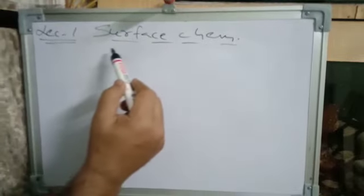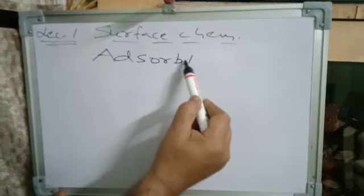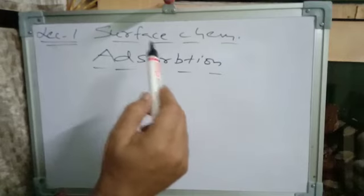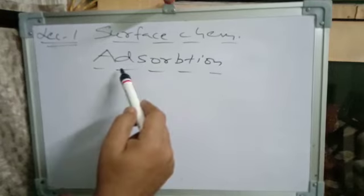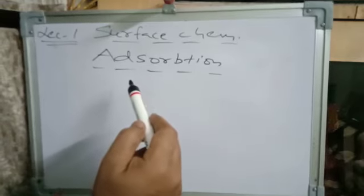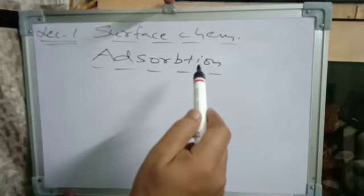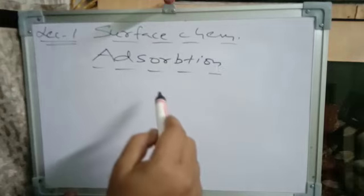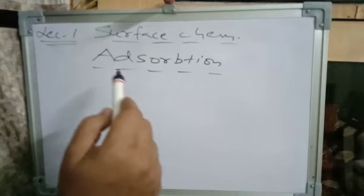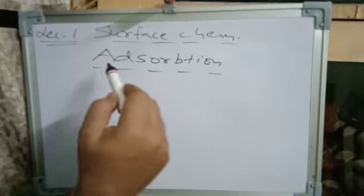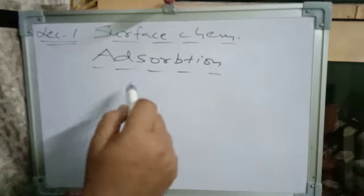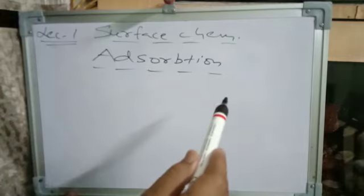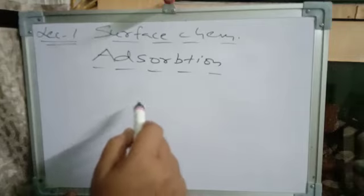What is adsorption? Adsorption is the phenomenon of attracting and retaining molecules only on the surface, so that there is a different concentration on the surface than in the bulk. This is called adsorption.